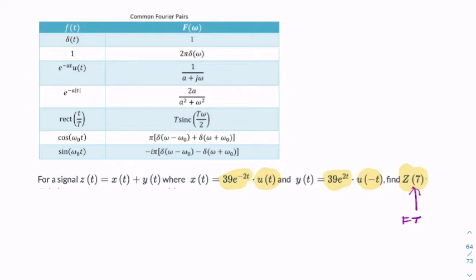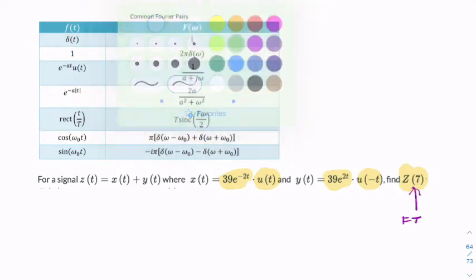So let's see if we can find that signal here. So first of all, let's recreate the composite signal Z of t. It might help if we try to visualize or sketch the signal first.